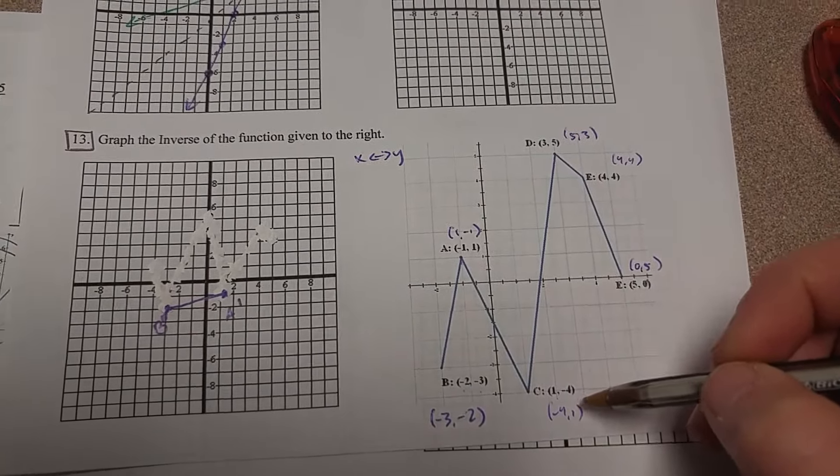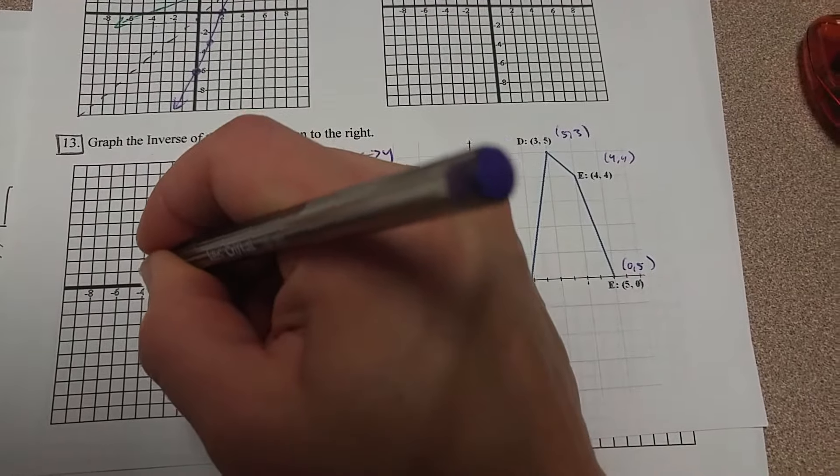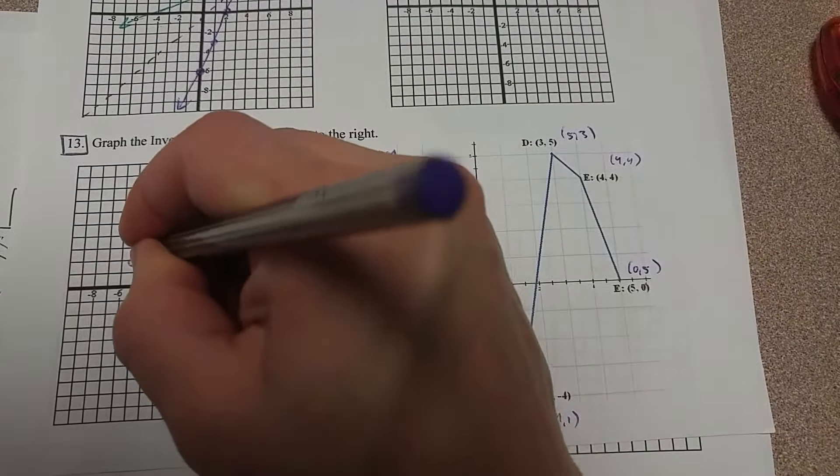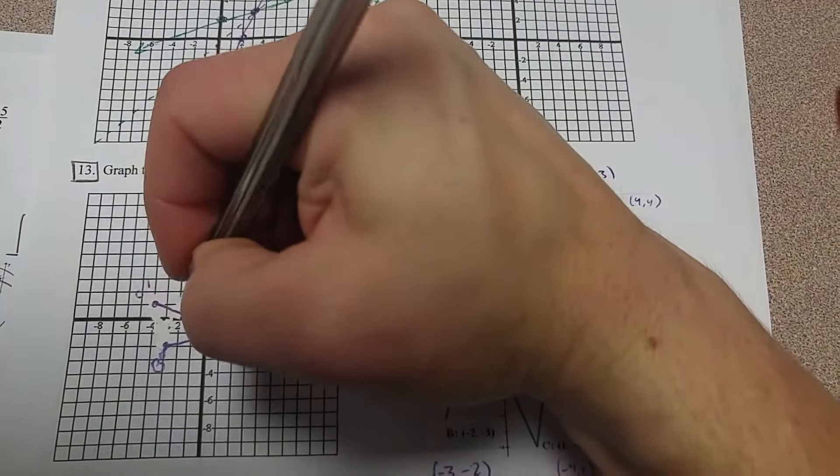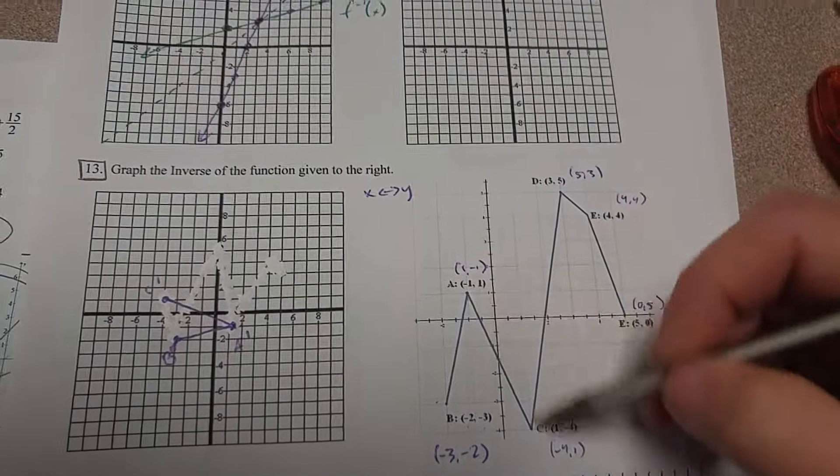And then C, the inverse here, is going to be negative 4, 1. So negative 4, 1. And that is C prime, and it is going to connect with A prime because C and A connect.